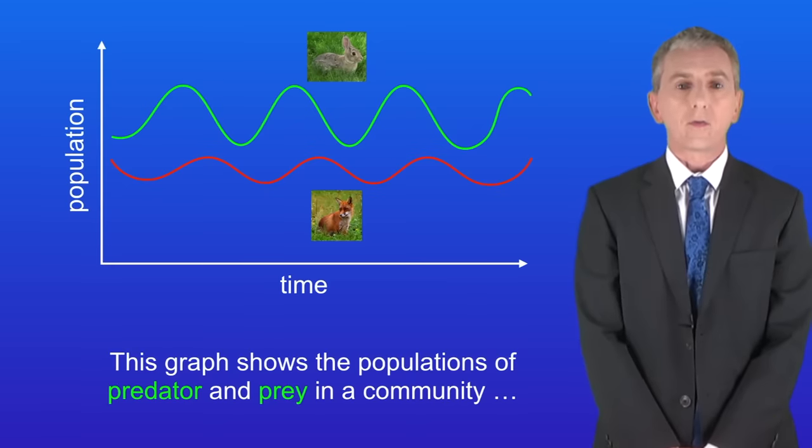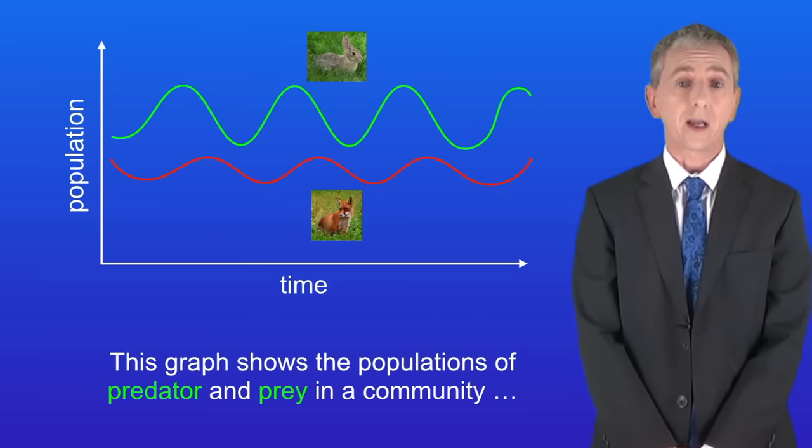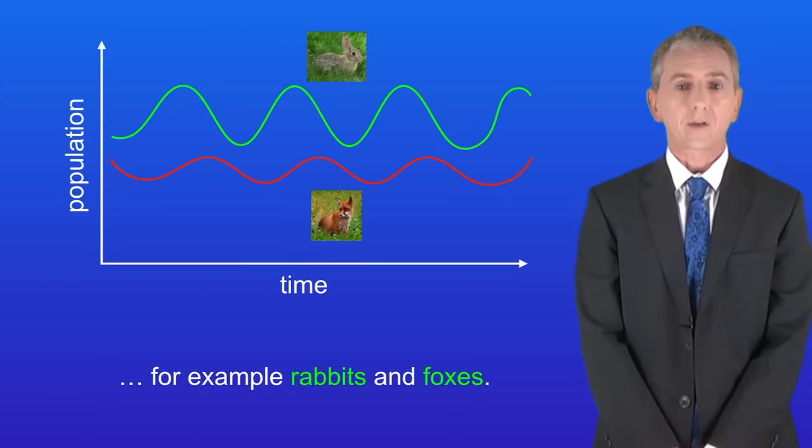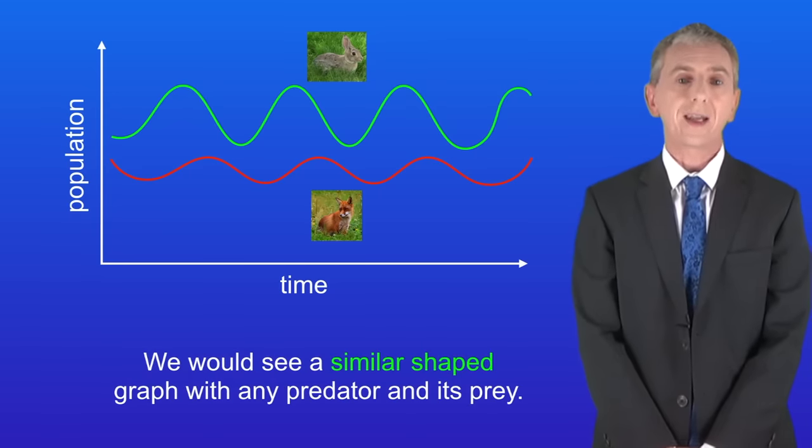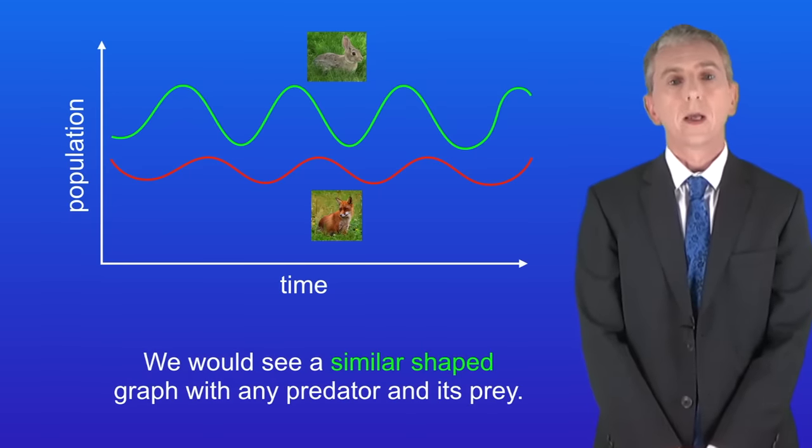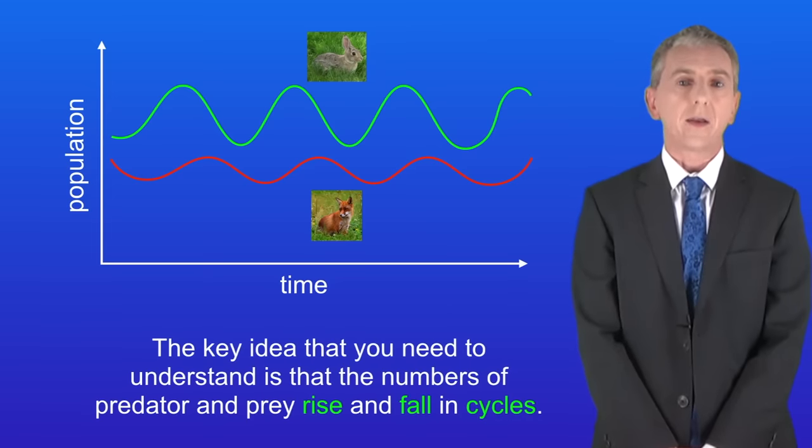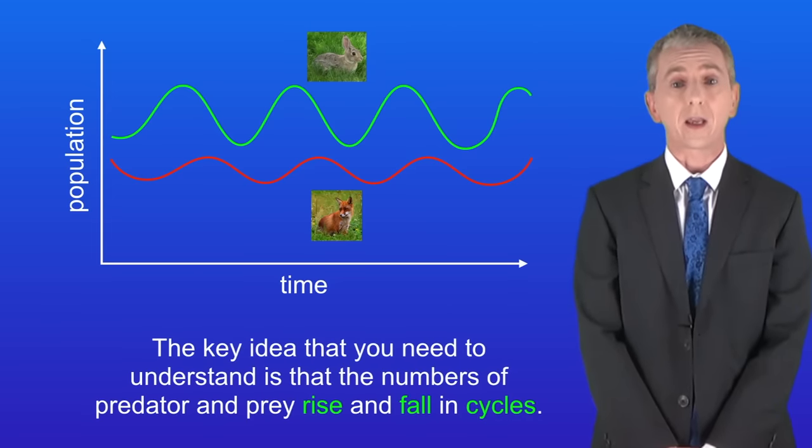I'm showing you here a graph of the populations of predator and prey in a community. For example rabbits and foxes. Now I should point out that we'd see a similar shaped graph with any predator and its prey. The key idea that you need to understand is that the numbers of predator and prey rise and fall in cycles.